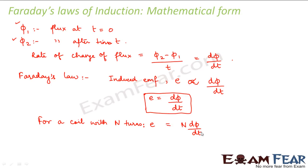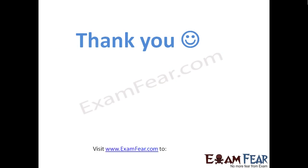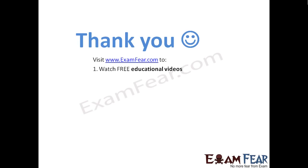Faraday's law only told us that there will be an induced EMF and that its magnitude would be dΦ/dt; he did not say anything about the direction. After Faraday's law came another law called Lenz's law, which spoke about the direction and introduced a negative sign. We will talk about the significance of this negative sign when we discuss Lenz's law.